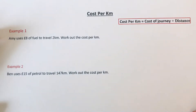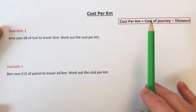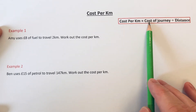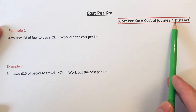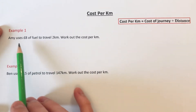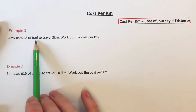Hi guys, welcome back, this is Maths 3000. Today I'm going to show you how to calculate the cost per kilometre of a journey. To do this, all you need to do is divide the cost of the journey by how many kilometres you are travelling. So let's have a look at example one.